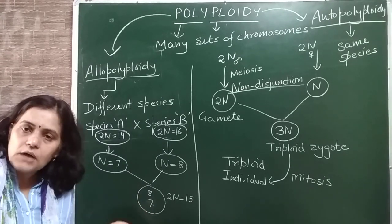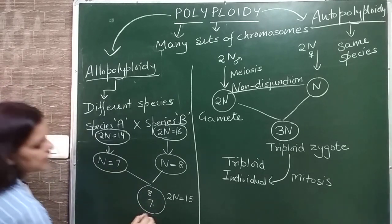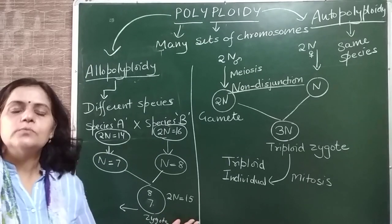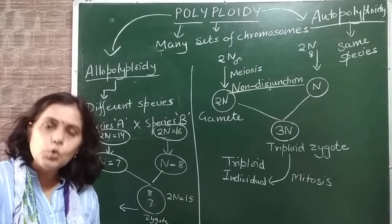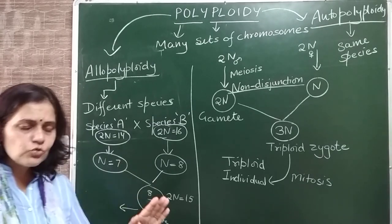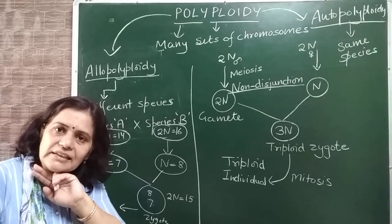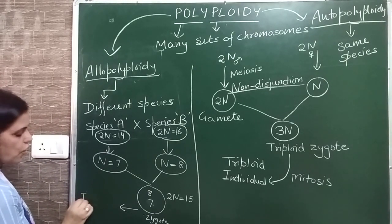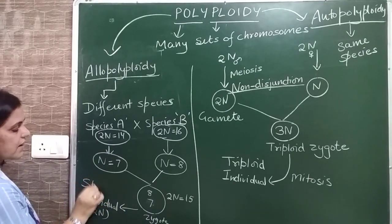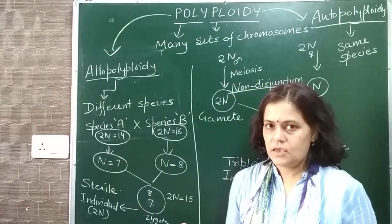But will this cell be able to undergo meiosis going forward? Will this individual, once formed, be able to produce gametes? No. Why? Because it does not have complete matching sets of chromosomes. It has chromosomes from two different species, and those chromosomes from different species will not pair with each other - they are not homologous chromosomes. So the individual formed will be 2N=15 but will be sterile. It cannot form gametes because during meiosis its chromosomes will not pair, so gamete formation will not occur.